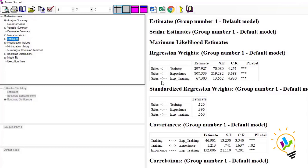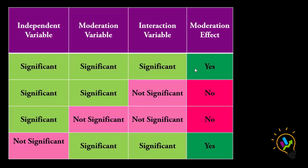Using this interpretation table we can determine whether the moderation effect is present. We must check: is the independent variable having a significant impact on the dependent variable? Is the moderation variable having a significant impact on the dependent variable? And is the interaction variable also having a significant impact on the dependent variable? If all three are significant, we say the moderation effect is present.